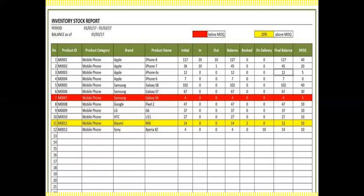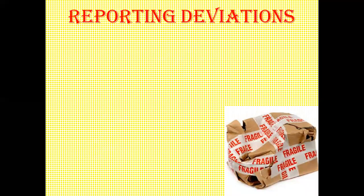A sample stock report displays product IDs, product categories, brand, product name, the code maintained against it, how many items are in stock, how many have been sold or sent to the shop floor, how many have been booked by customers, how many are out on delivery, what the balance is, and what the minimum order quantity is. This helps maintain and monitor stock levels.